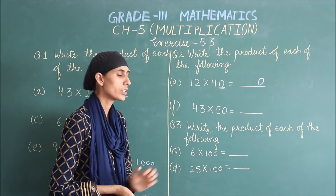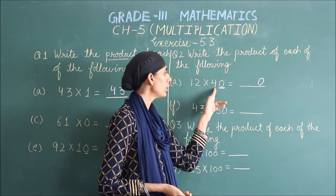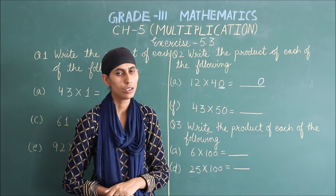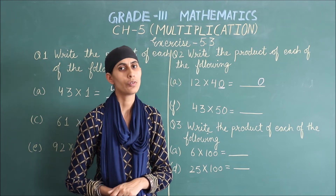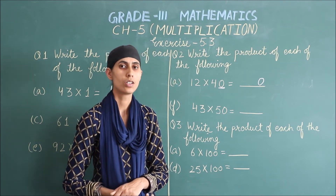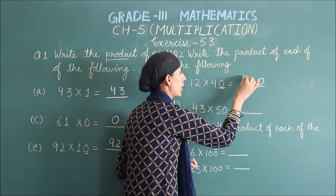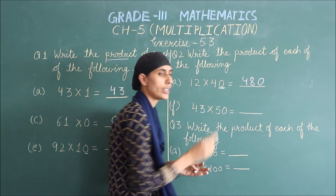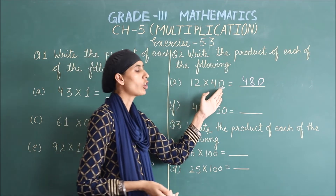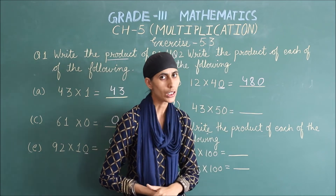اب آپ کے پاس کیا بچا؟ 12 اور 4. آپ کو 12 کا table 4 تک read out کرنا ہے: 12 ones are 12، 12 twos are 24، 12 threes are 36، 12 fours are 48. تو آپ کا answer 48 آیا۔ Write down کر دیا — it means 12 multiply by 40 کا answer ہے 480۔